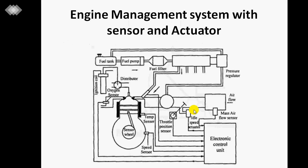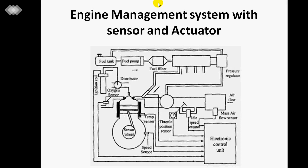Now we move to the engine management system with sensors and actuators. The figure shows different sensors connected to the engine: throttle position sensor, temperature sensor, speed sensor, and mass air flow sensor. These are all connected to an electronics control unit. This system helps the engine run at optimum speed, manages ignition and fueling requirements, and controls the power and speed of the engine.